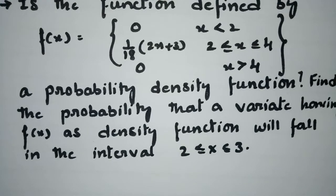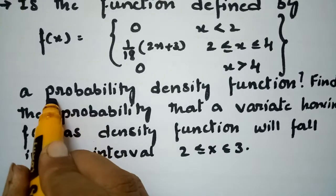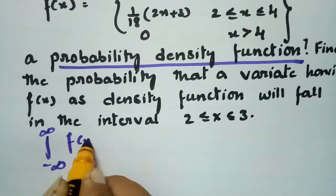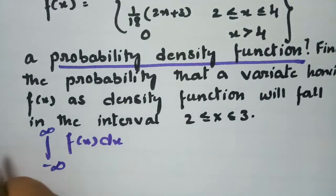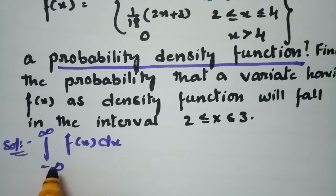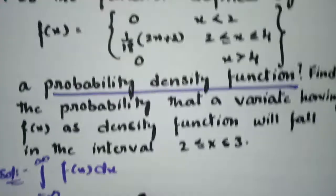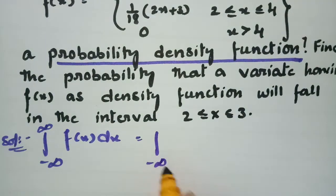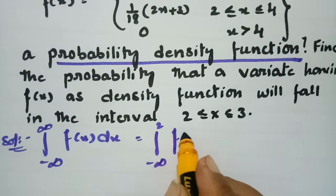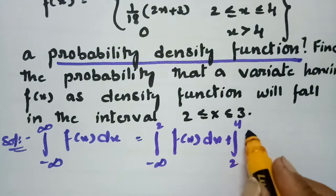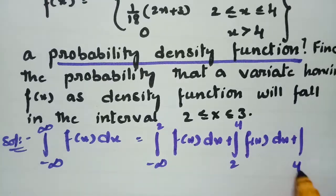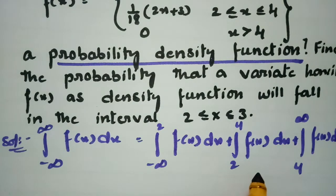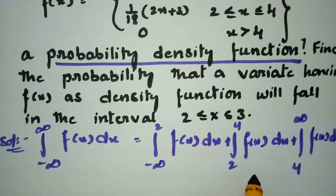First, we have to prove that the given function is a probability density function. To show this, we need to prove that the integral from minus infinity to plus infinity of f(x) dx is equal to 1. We split this integral by introducing the boundary points 2 and 4, giving us three parts: from minus infinity to 2, from 2 to 4, and from 4 to infinity.